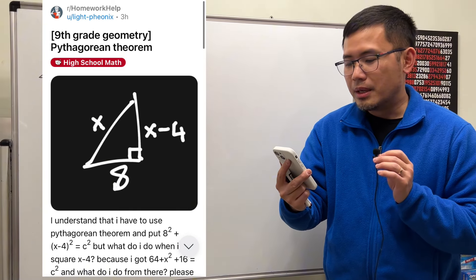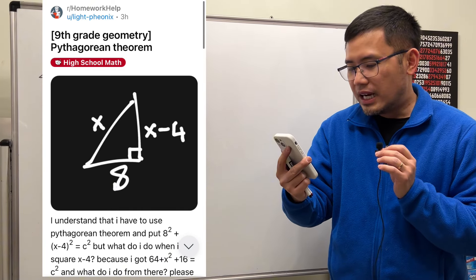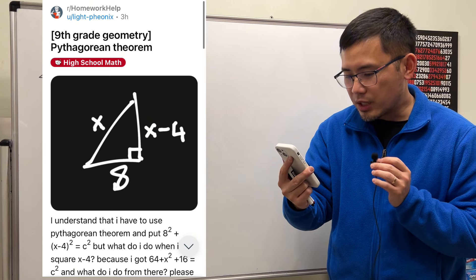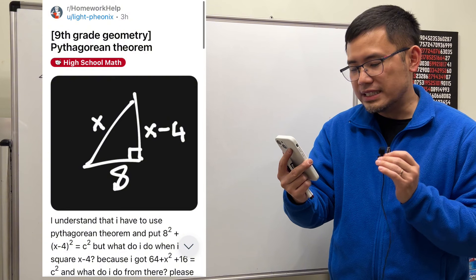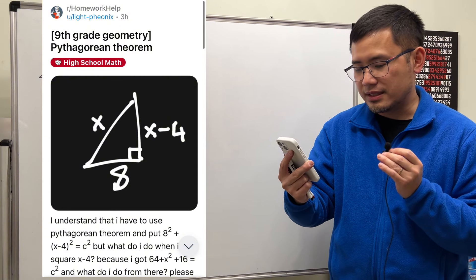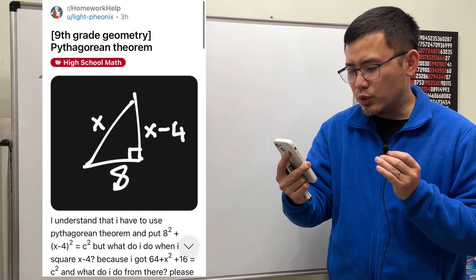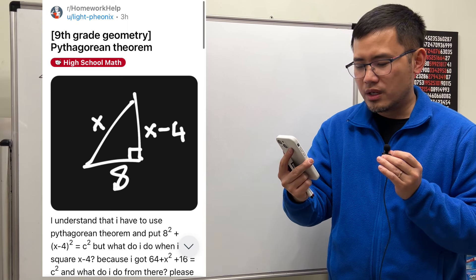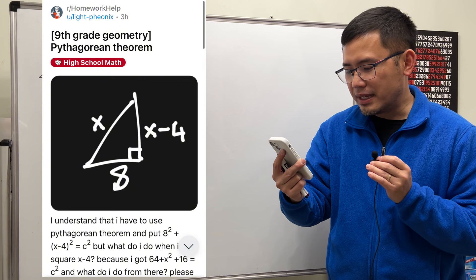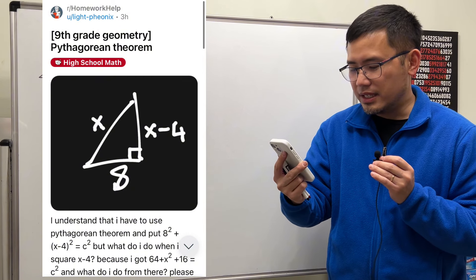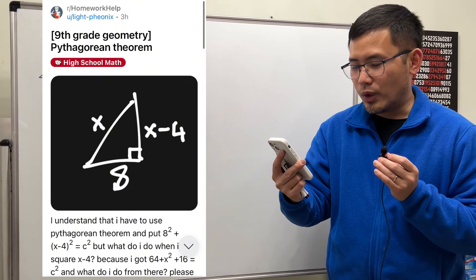I understand that we have to use the Pythagorean theorem to put a-squared plus parentheses x minus 4 squared, and then that's equal to c-squared. But what do I do when I square the x minus 4? Because I got 64 minus x-squared plus 16 equals c-squared, what do I do from here?